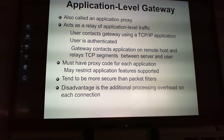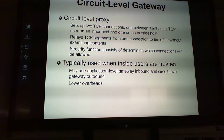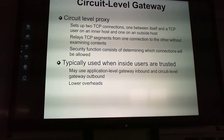A circuit-level gateway sets up two TCP connections, relays TCP segments, and its security function determines which connections are allowed. It's typically used inside when users are trusted. The application-level gateway is used inbound and the circuit-level gateway outbound — with generally lower overhead.